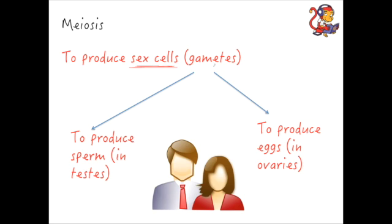Sex cells are called gametes — that might be a new word to some of you, but we need to know that one. In humans the gametes are sperm and eggs. In the male, sperm is produced in the testes, and in the female, eggs are produced in the ovaries. A female is born with her eggs, whereas the male produces sperm on a daily basis. Meiosis is the cell division that enables our bodies to produce these sex cells.